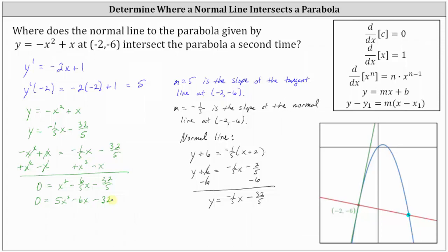Let's see if we can solve this by factoring. The factors of five x squared are five x and x. We need to place the factors of negative thirty-two in the second positions so that the sum of the inner and outer products is negative six x. If we place minus sixteen in the first binomial and plus two in the second binomial, the outer product is ten x and the inner product is negative sixteen x, which gives a sum of negative six x. Setting each factor equal to zero gives us five x minus sixteen equals zero or x plus two equals zero, which means x equals sixteen fifths or x equals negative two.